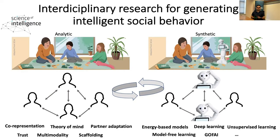Now that we have set our goals, we need a research framework to achieve them. This framework comes from the Cluster of Excellence in Berlin, where we had a framework to collaborate with people from different disciplines. It is called Analytic and Synthetic Loops. To achieve this framework, first you have to define your goal as an interdisciplinary research team, and the goal is intelligent social behavior on humanoid robots. This framework enables integrating knowledge between two different disciplines.